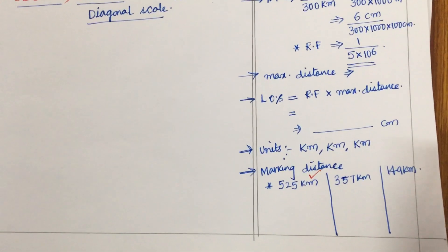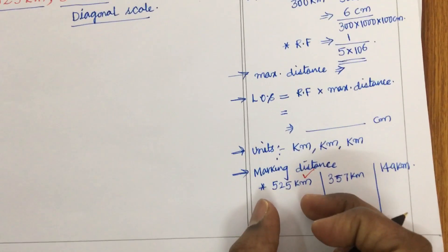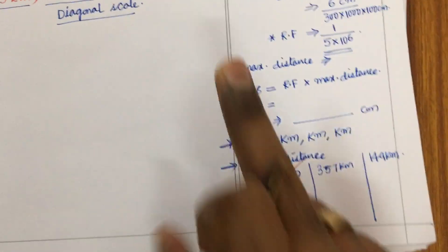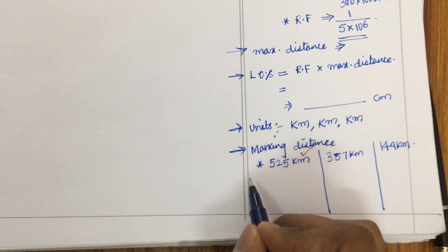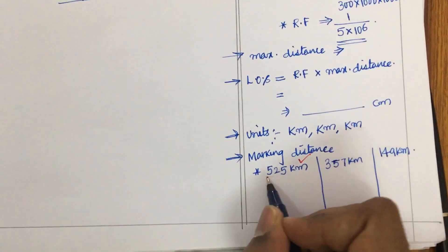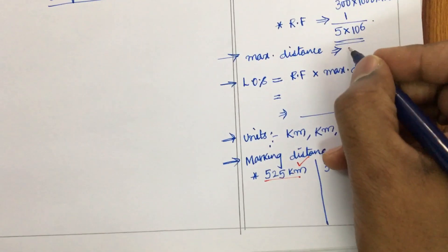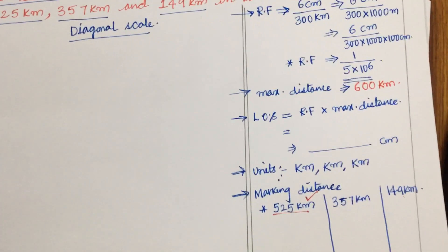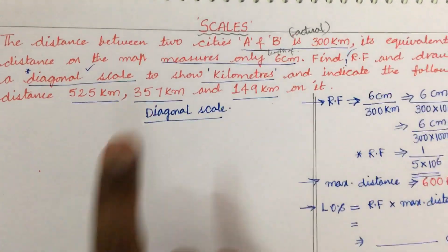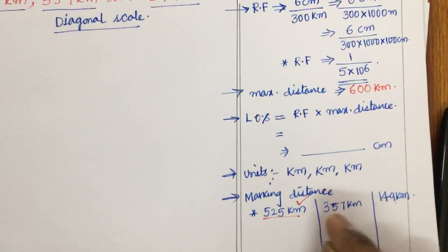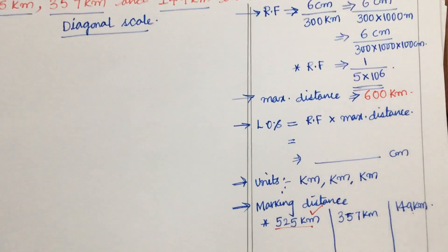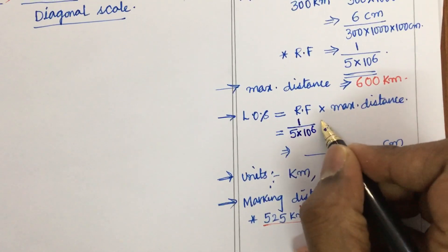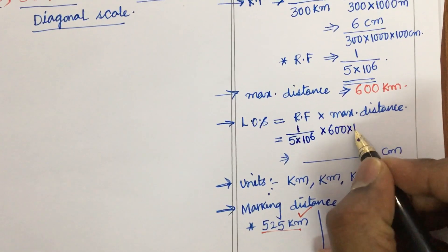That means our scale can read to a maximum of 600 kilometers — the round figure value nearest to 525 km. We take 600 km as the maximum distance since it is missing in the problem. By looking at the marking distances we can assume the maximum marking distance is 600 kilometers. As I know the maximum distance is 600 km, I can now work out the length of the scale: RF × maximum distance = 1/(5 × 10^6) × 600 km.